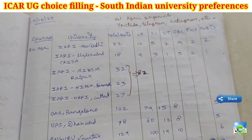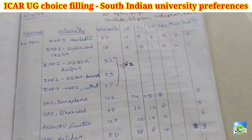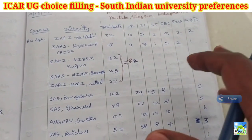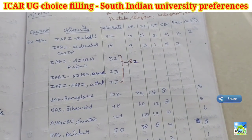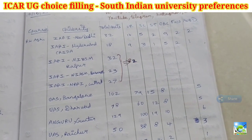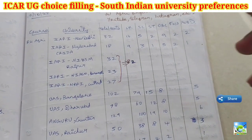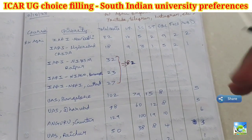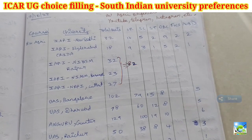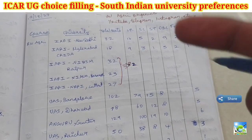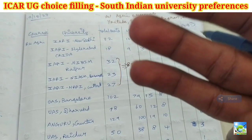Hi, welcome everyone to our YouTube channel. Here at You Agree Organics, in this video we will see about ICAR seed preferences for UG. In UG there will be different streams such as BSc Agriculture, BSc Horticulture, BSc Forestry, BSc Natural Farming, and many other courses. Most of our channel subscribers belong to South India, so I will give choice preferences especially for South India, covering the top courses at the national level, state level, and course level.